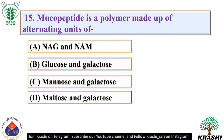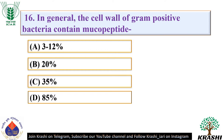Question number 15: Mucopeptide is a polymer made up of alternating units of. The correct answer is option A — NAG and NAM, which is N-acetyl glucosamine and N-acetyl muramic acid. In general, the cell wall of gram-positive bacteria contains mucopeptide — the correct answer is option D — 85%. In general, the cell wall of gram-negative bacteria contains mucopeptide — the correct answer is option A — 3 to 12%.